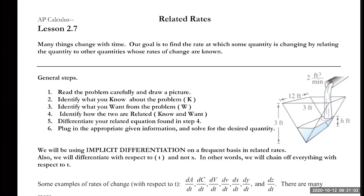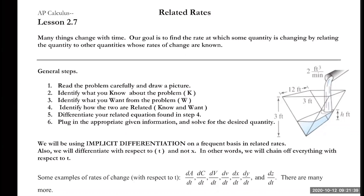If y is not t, I have to multiply by dy/dt. If x is not t and I'm taking the derivative with respect to time, I multiply by dx/dt. Rates you'll encounter include dA/dt (area), dC/dt (circumference), dV/dt (volume), dx/dt, dy/dt, and dz/dt — all rates of change with respect to time.